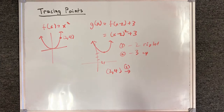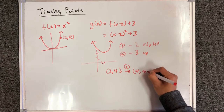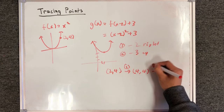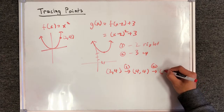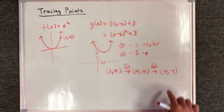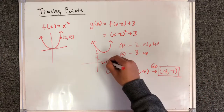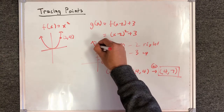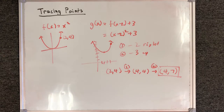After transformation 1 — 2 to the right — that means I'm going to add 2 units to the x-coordinate, turning it to 4 comma 4. And then 3 units upwards — that would be adding 3 units to the y-coordinate — giving us 4 comma 7. And this final point we know for sure will be on the resulting parabola that we have transformed.